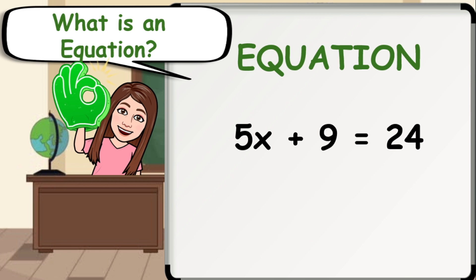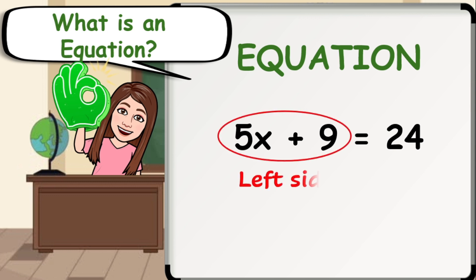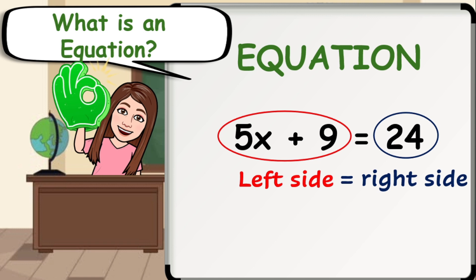For example, 5x plus 9 is the expression on the left side of the equation, which is equal to the expression 24 on the right side of the equation. The process of finding the value of the variable is called solving the equation, which will be discussed on our next video lesson.